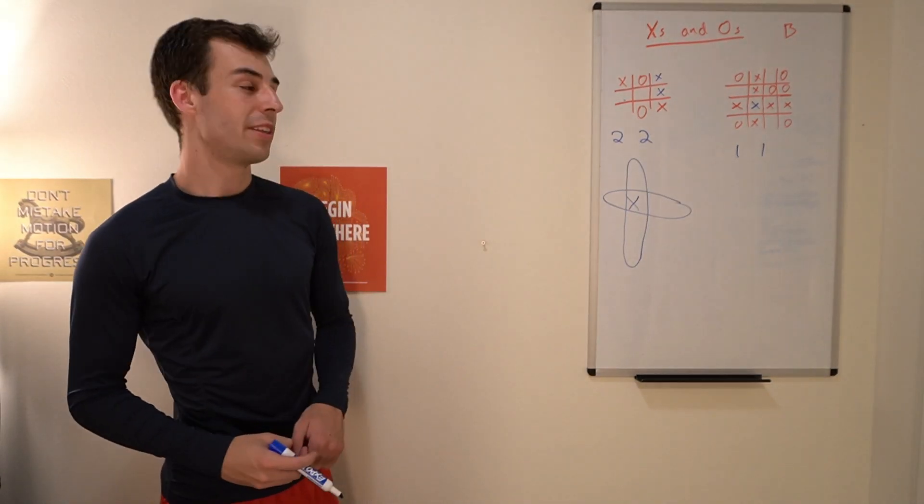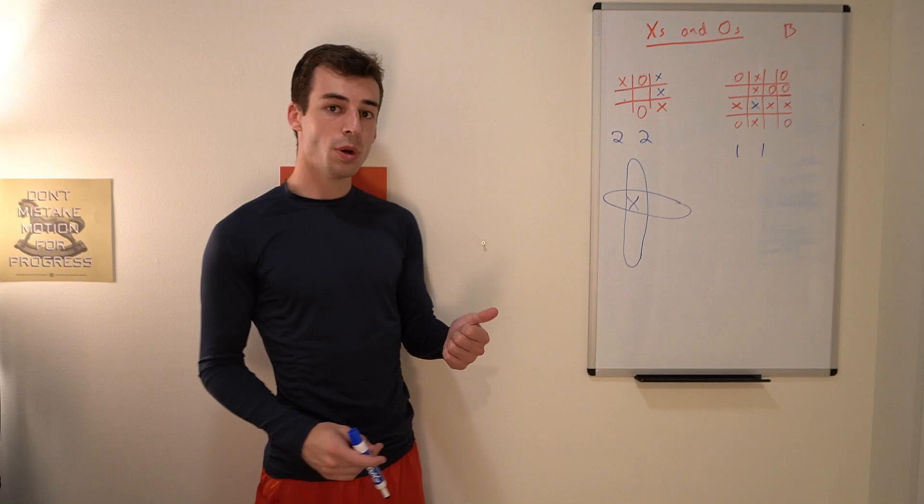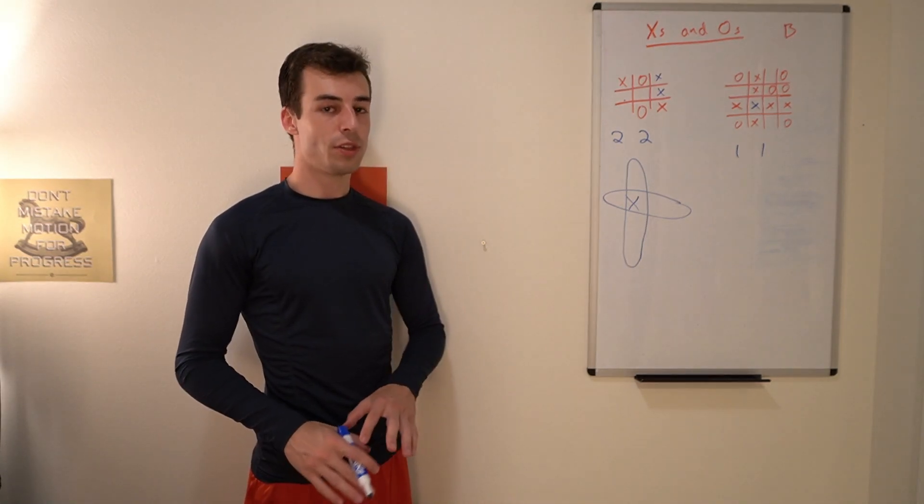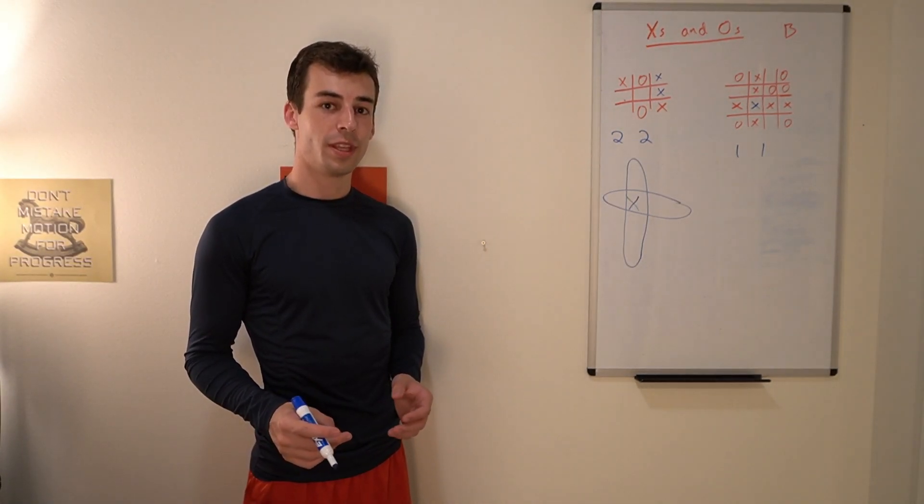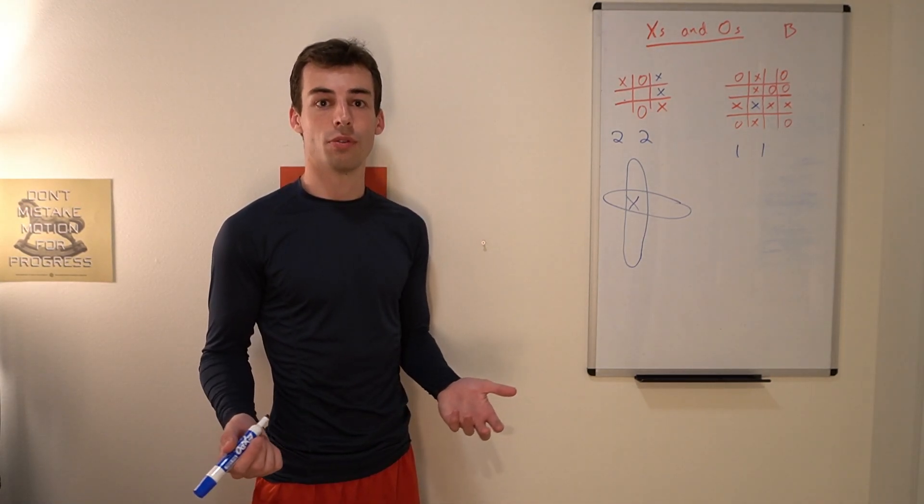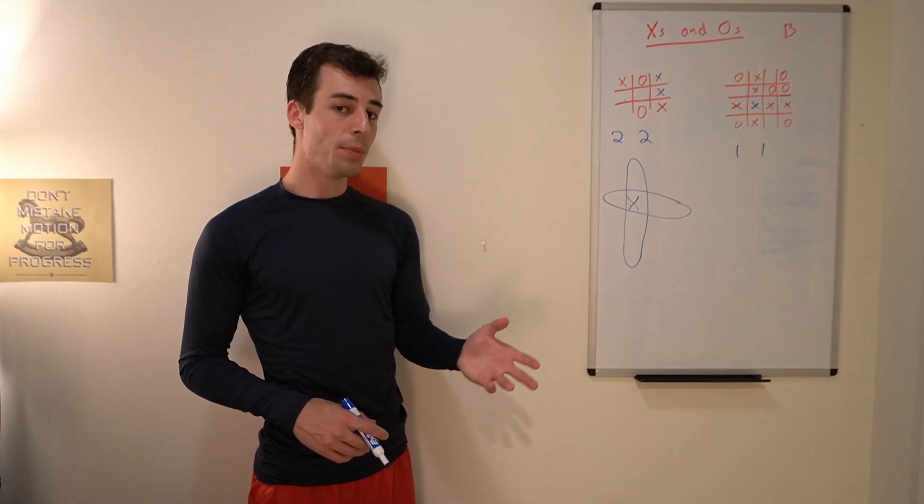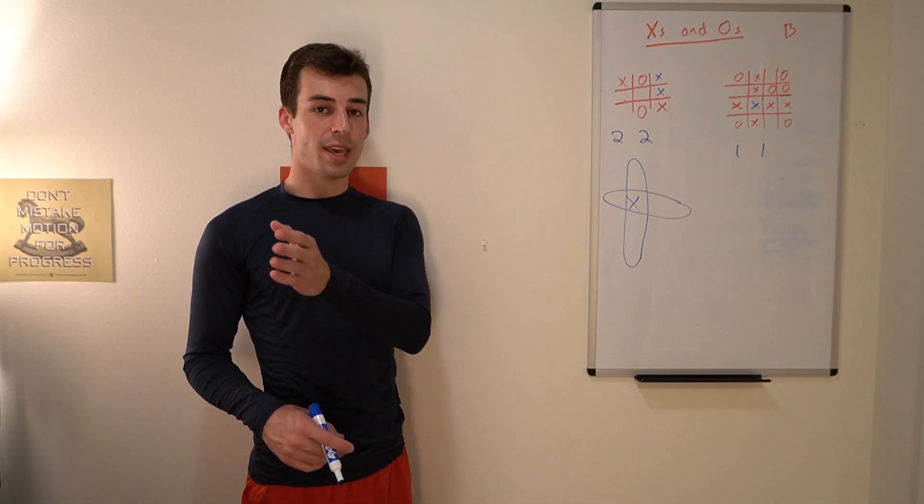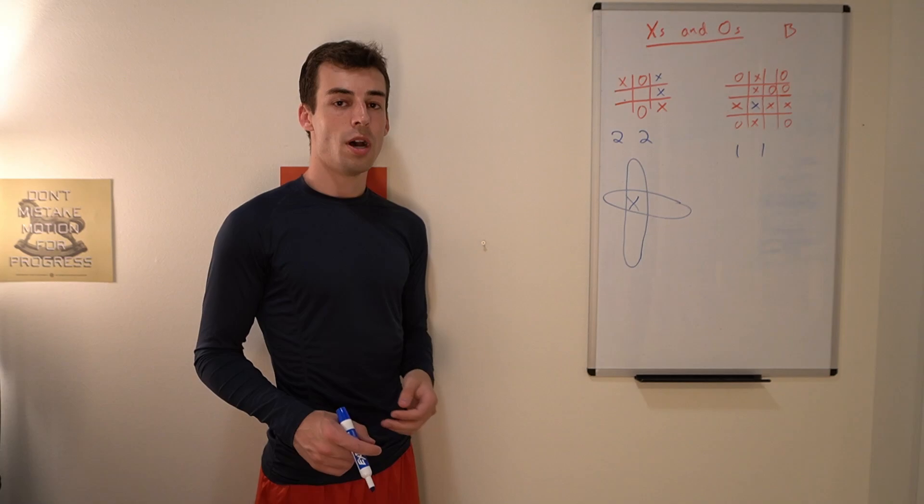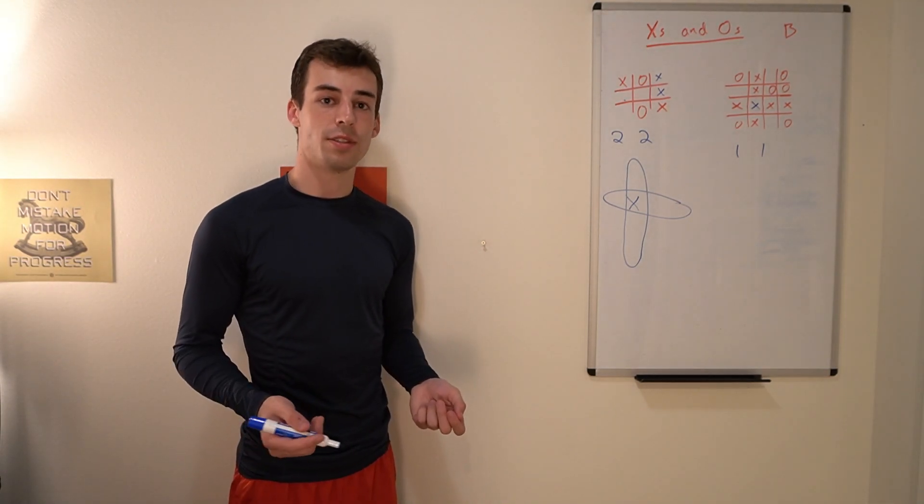So a clean way of implementing this is we can say for each row and for each column, we want to check if there are any O's in that row or column. If there are, we obviously can't win using that row, for instance, because we'll be blocked. But if we're not blocked, then we can place X's in the entire row equal to the number of dots in that row.